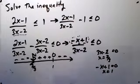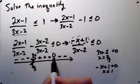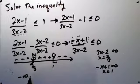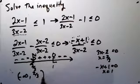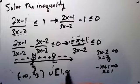But not including two-thirds because it's undefined at two-thirds. And to the right of one, including one because we're zero there. So we're going to go from minus infinity to two-thirds and from one to infinity.